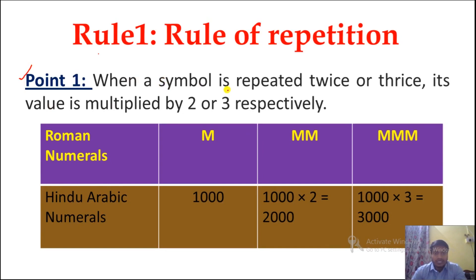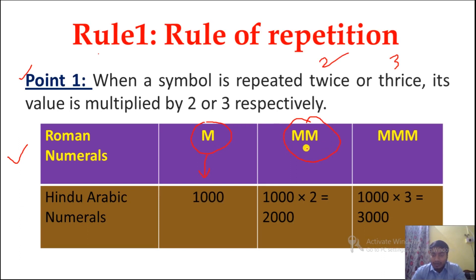Point number 1: when a symbol is repeated twice or thrice, its value is multiplied by 2 or 3 respectively. For example, the symbol M has value 1000. If M is written 2 times, the value is 1000 multiplied by 2, giving 2000. If M is written 3 times, the value is 1000 multiplied by 3, giving 3000.